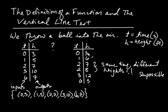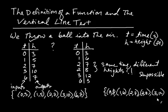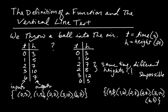Likewise, let's create a set of ordered pairs for the second table. That set looks like this: (0, 3), (1, 6), (2, 7), (2, 8), (3, 12), and (6, 3). Again, using braces to denote the collection. So here are our two collections of ordered pairs, and using this notation, we're ready for the definition of a function.